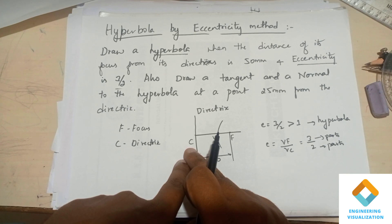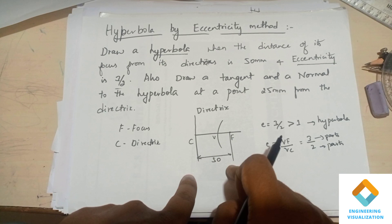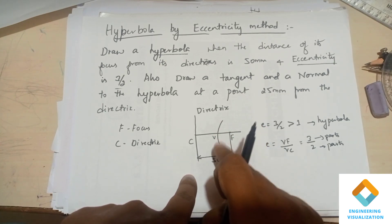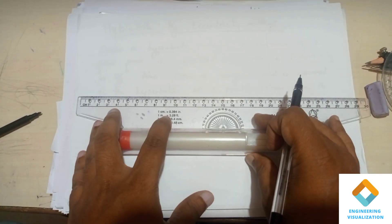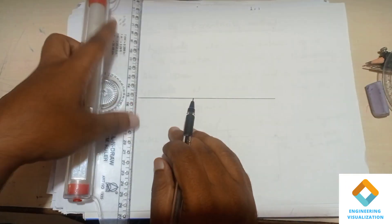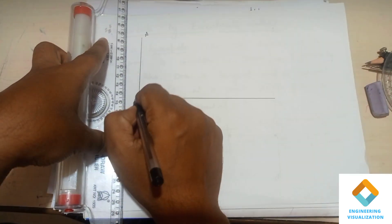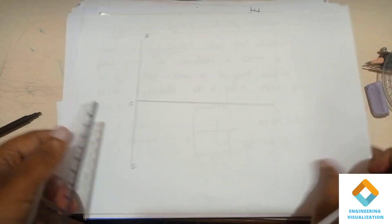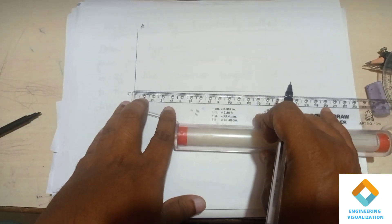In a simple diagram, the C point represents the directrix shown as a vertical line, and the curve drawn is the hyperbola. We have to draw things in between. First, I'll be drawing one horizontal line at a certain distance, and exactly perpendicular to this I'll be drawing the directrix. I'll mark this as A-B and this is your C point. In the diagram we take 50 mm between the directrix and the focal point.